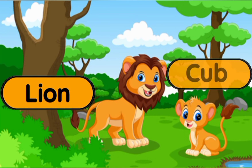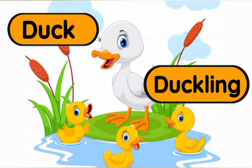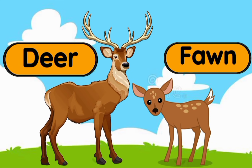Lion — a baby lion is called a cub. Duck — a baby duck is called a duckling. Deer — a baby deer is called a fawn.